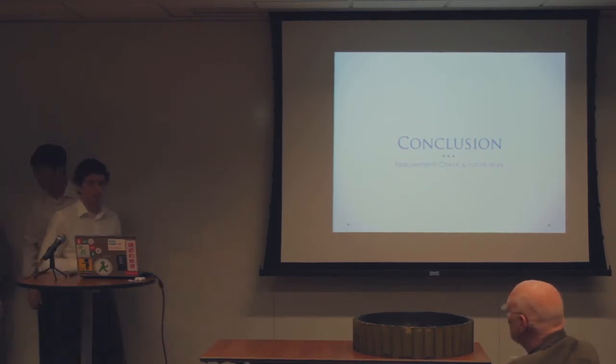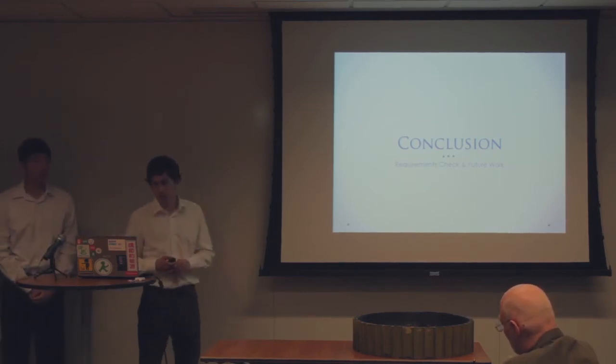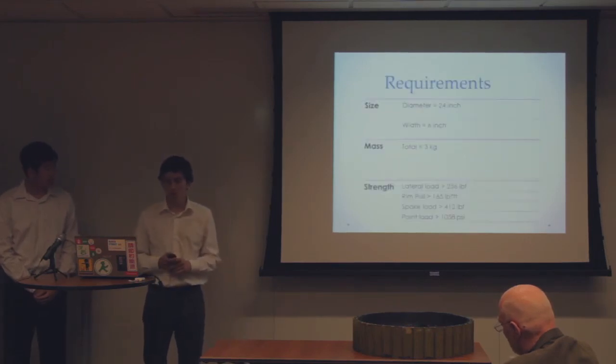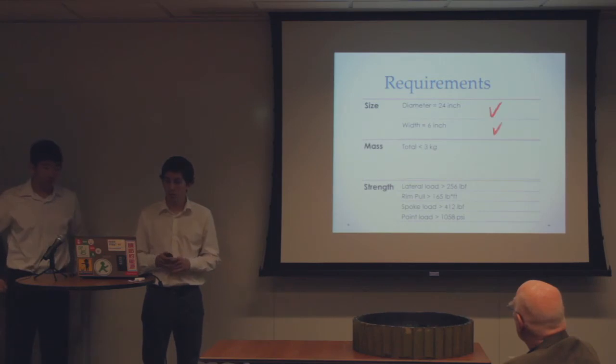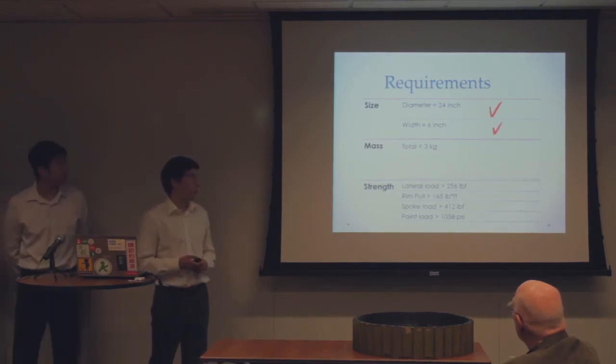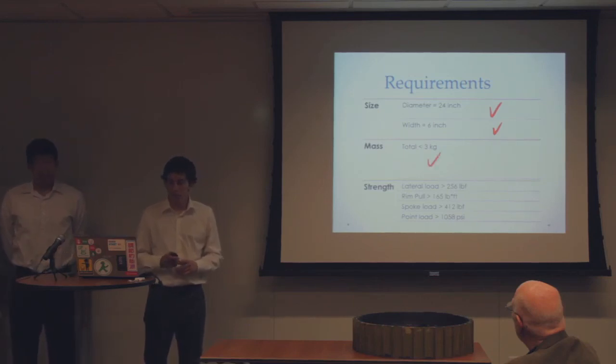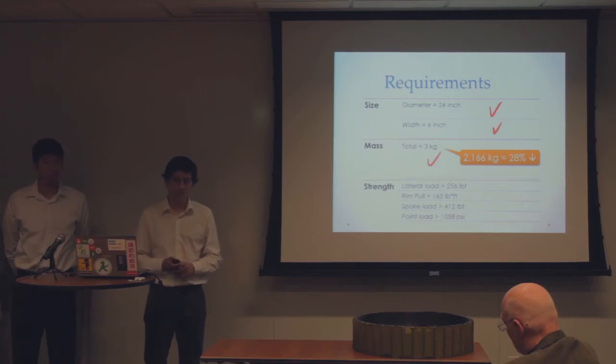Okay, so just to make some concluding remarks about our final product here, to go through our requirements again, to see if we match those requirements. The size we did match, the final wheel is 24 inches in diameter, 6 inches in width. The total mass actually came out to only being 2.166 kilograms, so that's a 28% reduction from our specifications, so that was really a good result.